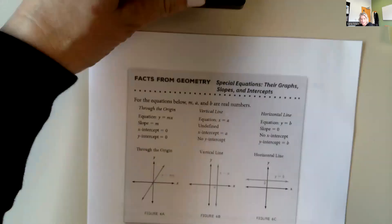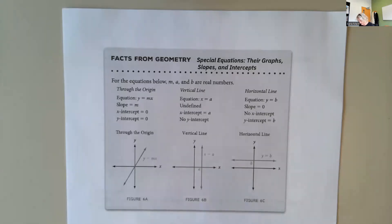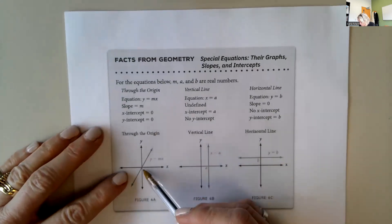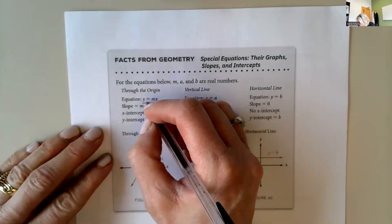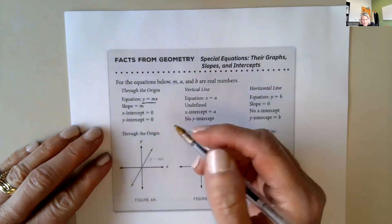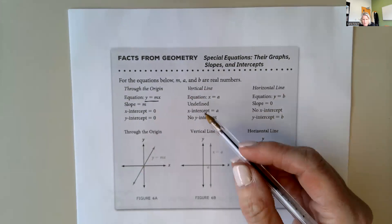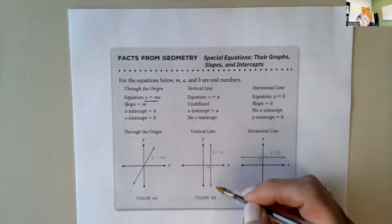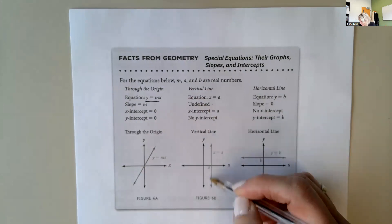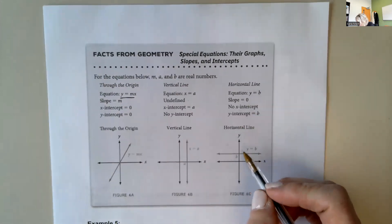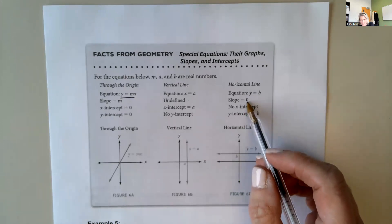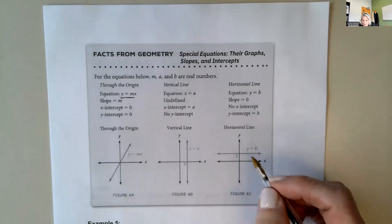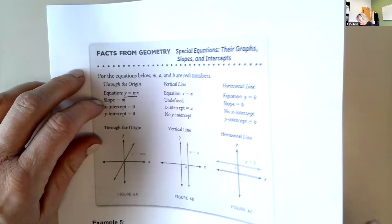Here are some geometry facts important for linear equations. If a line passes directly through the origin, the y-intercept is 0 and the equation is y equals mx. For a vertical line, the slope is undefined and the equation is x equals a. For a horizontal line, the slope equals 0 and the equation is y equals b, where b is the y-intercept.